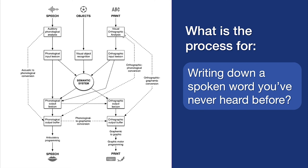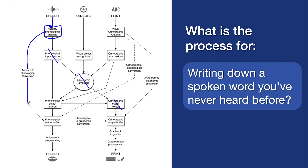What about writing down a spoken word you've never heard before? In this case it's not in the semantic system, it's not in any of your lexicons. So you understand the phonemes — if it's in a language you speak — you convert them into a phonological spoken plan, you sound it out slowly to yourself, use the rules, convert them into letters, and produce those letters onto paper or screen.